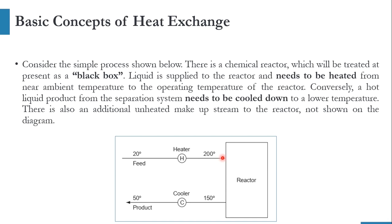Looking at this diagram, you can see that this reactor is a black box — we are not interested in what reaction is going on inside it. The feed coming to this reactor is heated from 20°C to 200°C using a heater. The product leaving the reactor at 150°C is cooled down to 50°C using a cooler. The stream which needs to be heated is known as the cold stream, and the stream which loses its temperature during heat exchange is known as the hot stream.